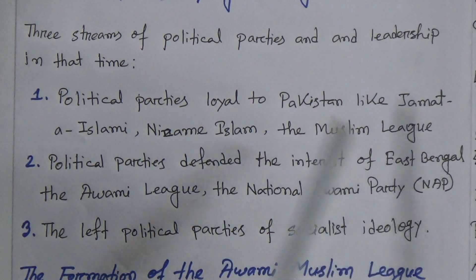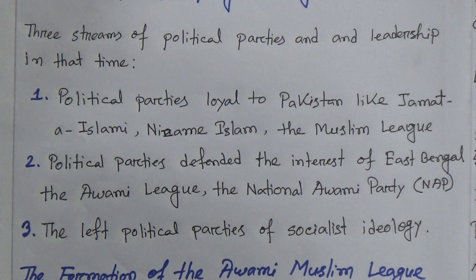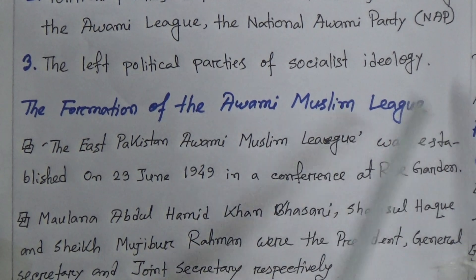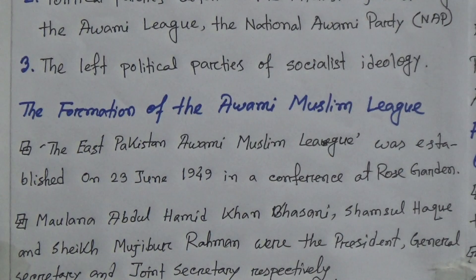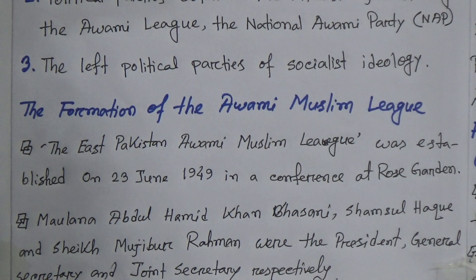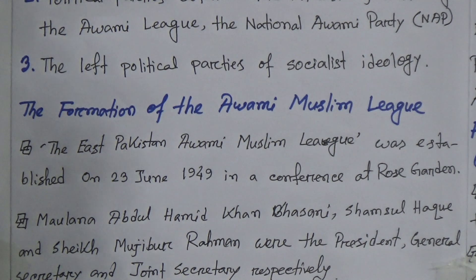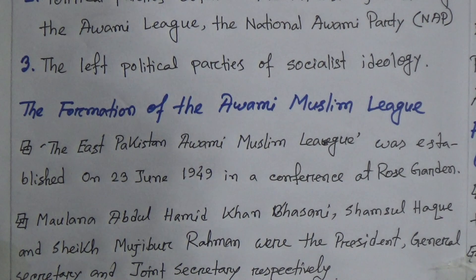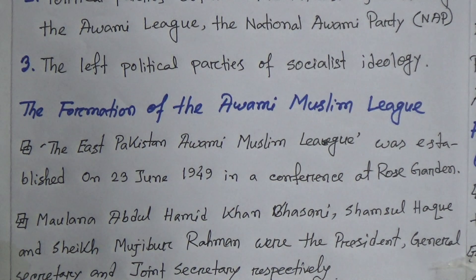Now we will discuss the formation of the Awami Muslim League. The East Pakistan Awami Muslim League was established on 23rd June 1949 in a conference at Rose Garden. At the beginning, Maulana Abdul Hamid Khan Bhashani was the president, Shamsul Haq of Tangail was the secretary general, and Bangabandhu Sheikh Mujibur Rahman was the joint secretary.